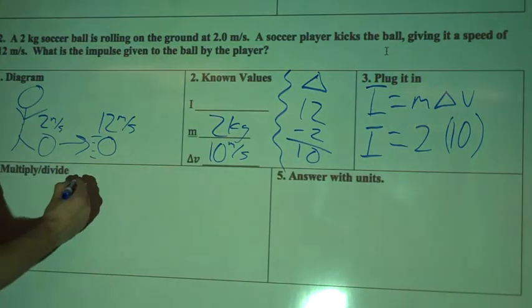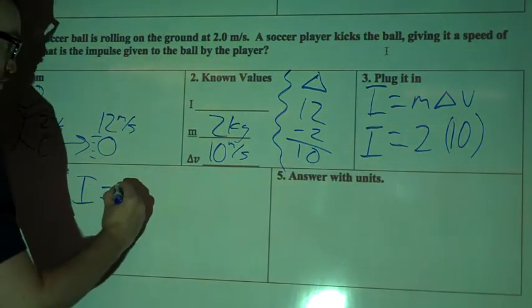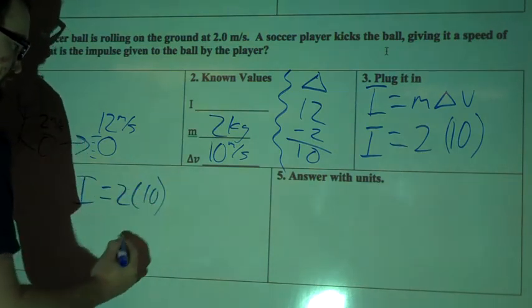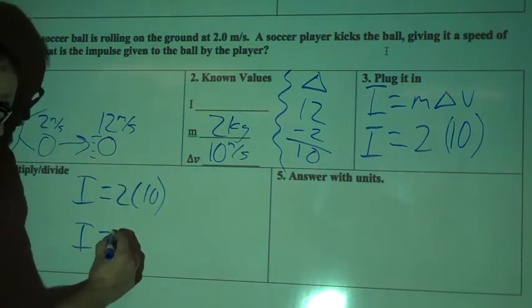Okay, so multiply. I equals 2 times 10. Impulse equals 20.